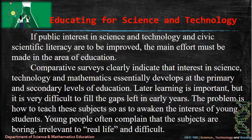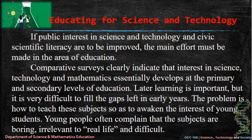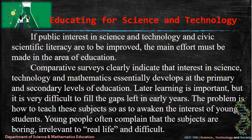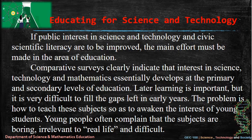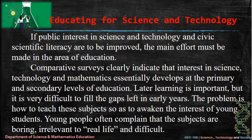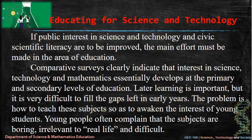Educating for science and technology. If public interest in science and technology and civic scientific literacy are to be improved, the main effort must be made in the area of education. Comparative surveys clearly indicate that interest in science, technology, and mathematics essentially develops at the primary and secondary levels of education. Later learning is important, but it is very difficult to fill the gaps left in early years. The problem is how to teach these subjects so as to awaken the interest of young students, who often complain that the subjects are boring, irrelevant to real life, and difficult.